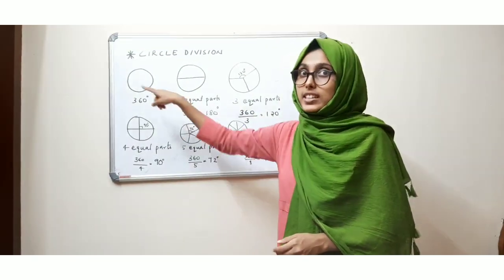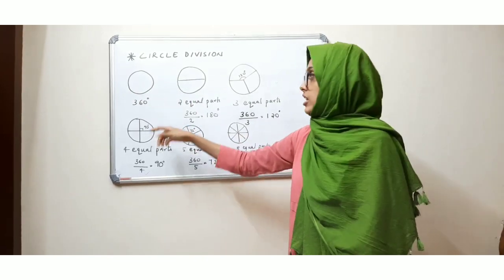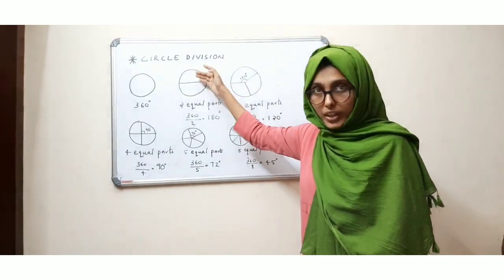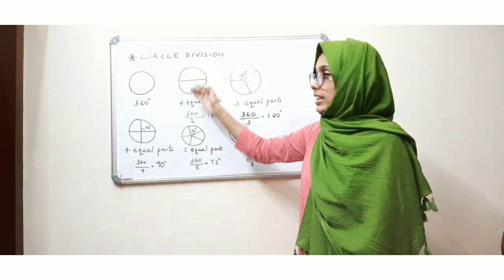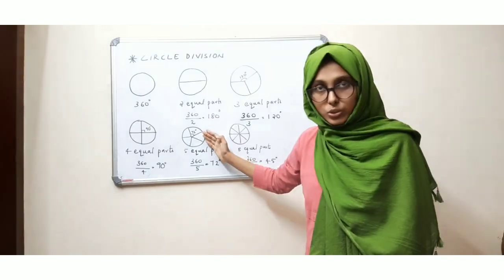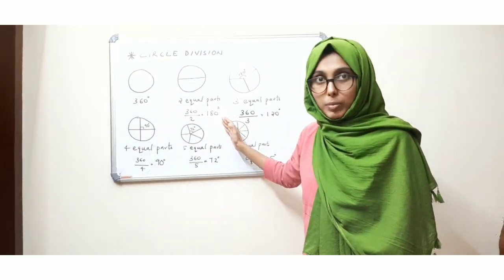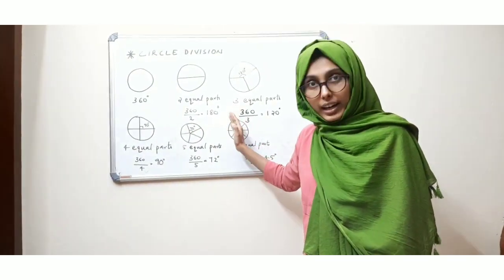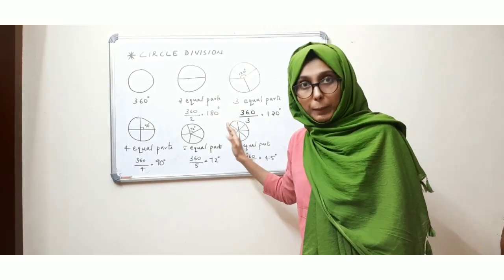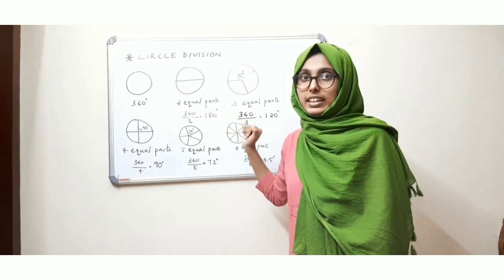A full circle is 360 degrees. So when we divide this circle into two equal parts, 360 divided by 2, one part will be of 180 degrees.